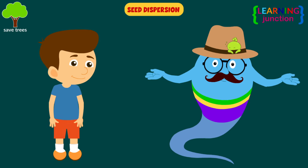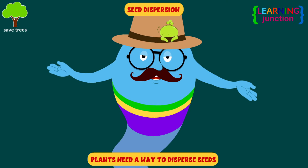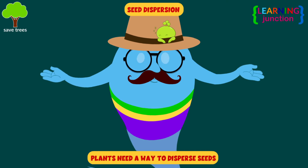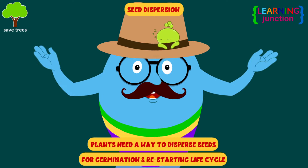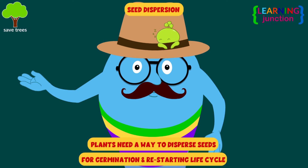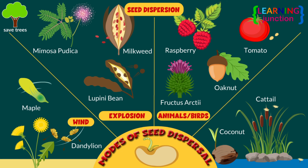Seed Dispersion. After the production of seeds, the plants need a way to disperse these seeds to favorable places where they can germinate and restart their life cycle. Most of the time, nature does the job of dispersion for the plants through wind, explosions, animals and birds, and water, as you've learned in the beginning.